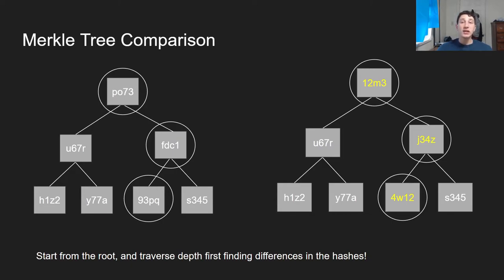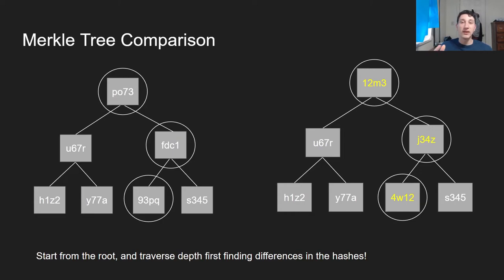There are further optimizations beyond that, where you basically only propagate the differences of the file — and that's kind of what Git does. You have the original file, Git calculates the diffs, and then those diffs are propagated over the network. But you use the Merkle Tree to actually calculate where the diffs are in the first place.